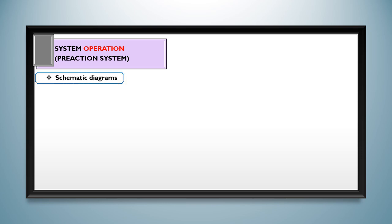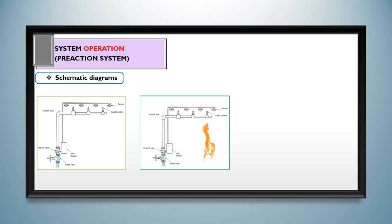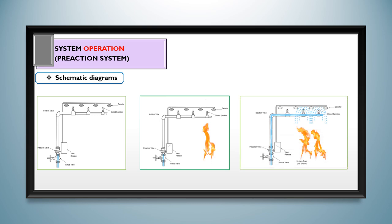As you can see on your screen, water is filled till the pre-action deluge valve. A supplemental detection system is installed in the same area as the sprinklers. All sprinklers are closed and normally there is no water in the piping. When fire occurs, a supplemental detection system senses the fire and automatically opens the pre-action valve. When the pre-action valve opens, water flows into the piping system. Water discharge occurs from each individual sprinkler as they fuse in response to heat.